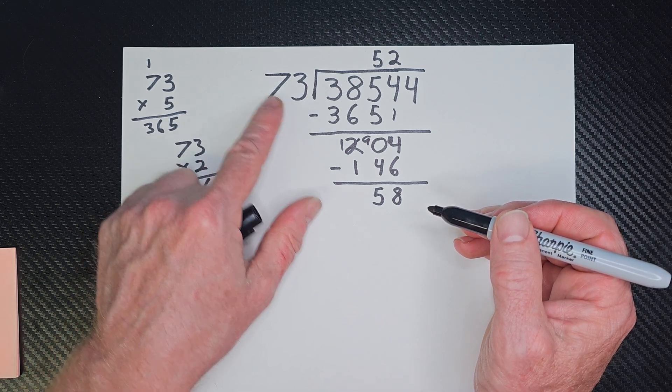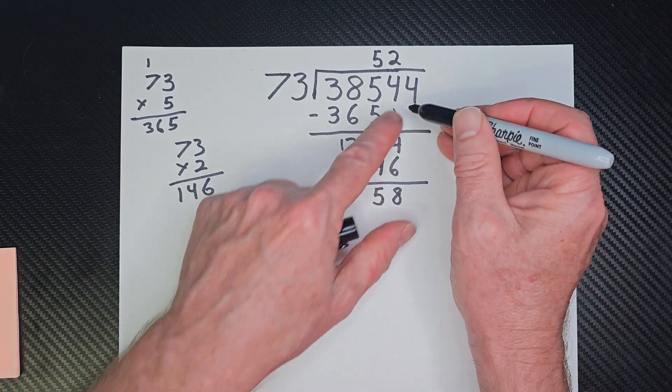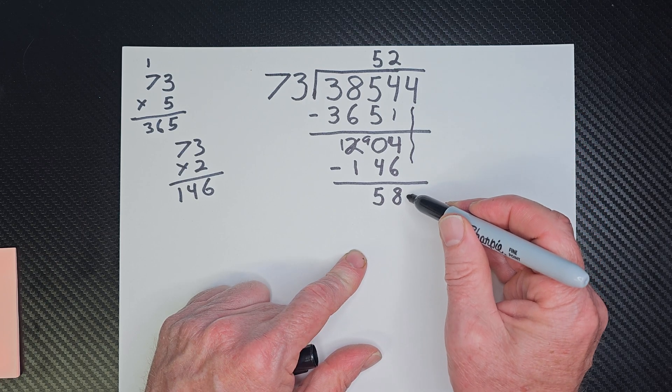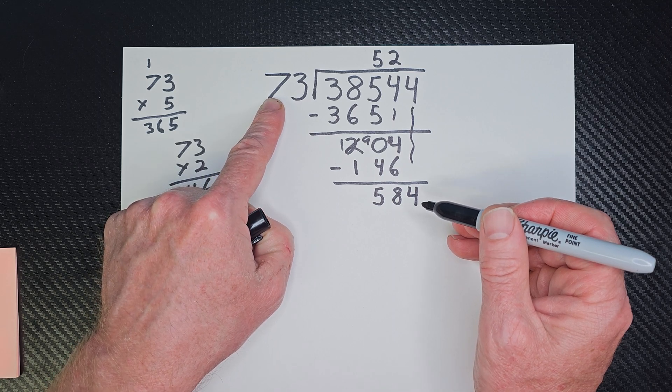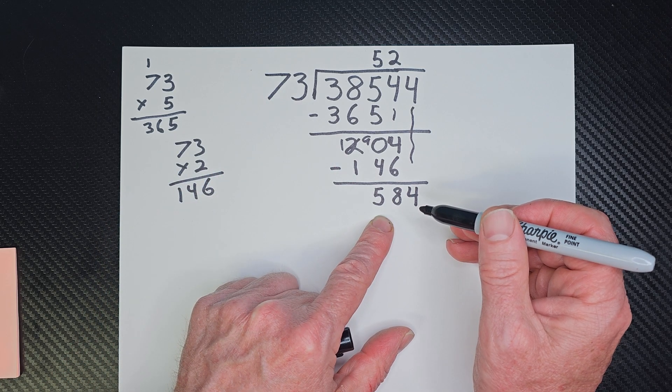Now I can't put 73 into 58. So now I just bring this next number all the way down right here. And this would be the 4. So I need to know how many times 73 goes into 584.